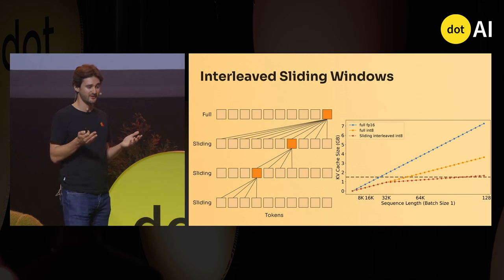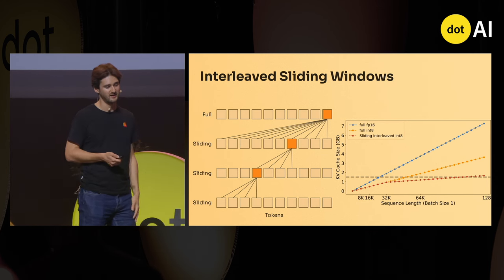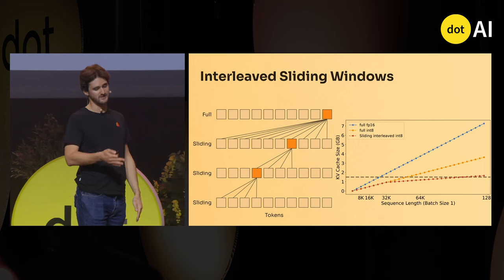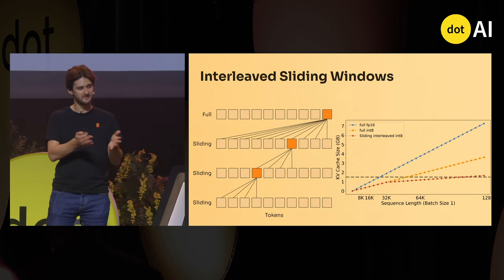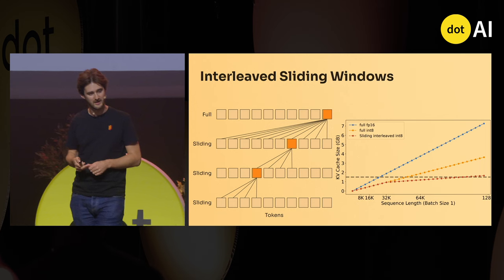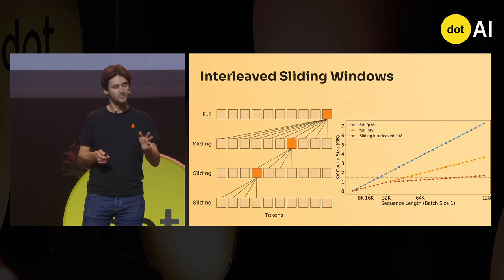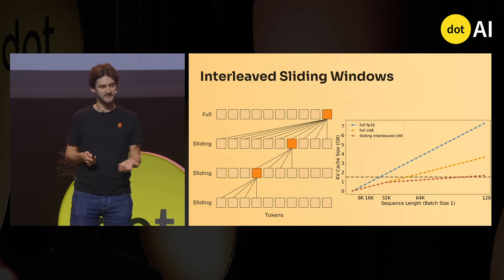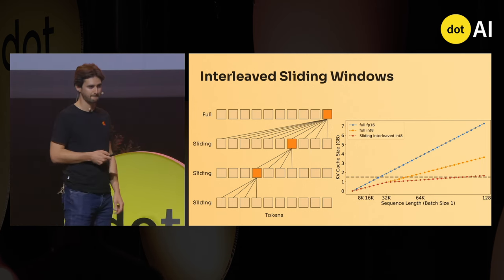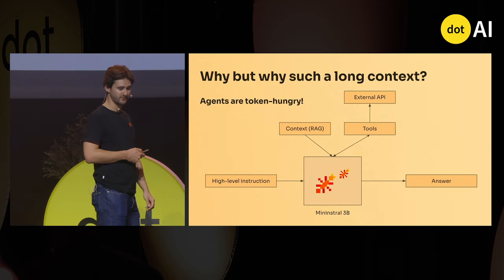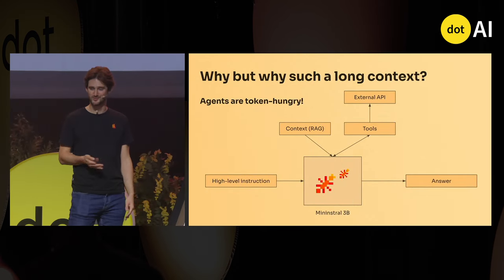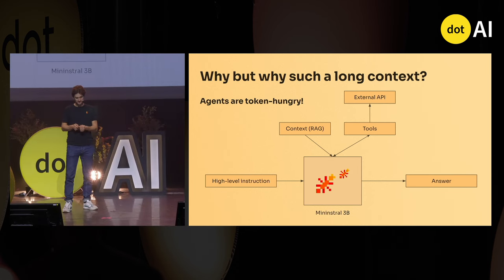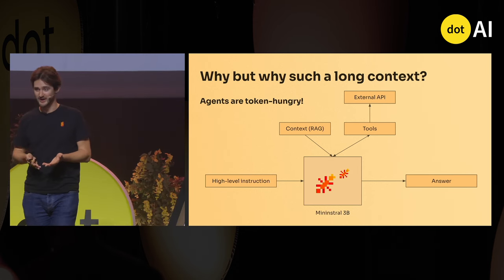The sliding window size is 32K — that's where there's an inflection in the curve. Before that, I'm fully utilizing standard attention; after that, I begin to see gains from the interleaved sliding windows, and I can go almost up to 120K tokens. That's why I bothered you with quantization and long context — because agents are token-hungry.